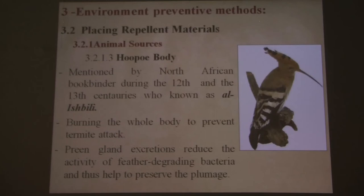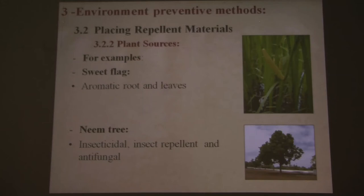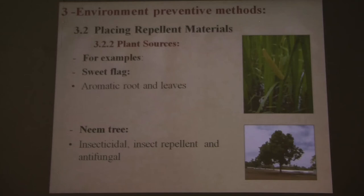For placing repellent materials, there are many plant sources that had been placed around archival materials or libraries. I will mention two examples: sweet flag, which has aromatic substances, and neem tree, which has insecticidal, insect-repellent, and antifungal properties.